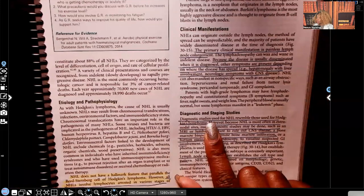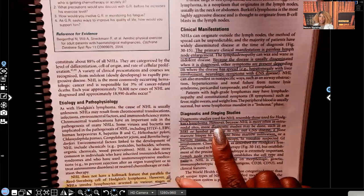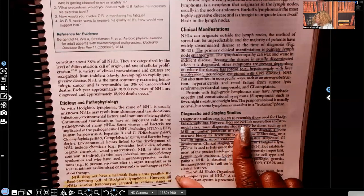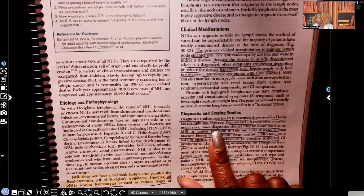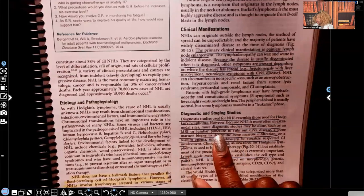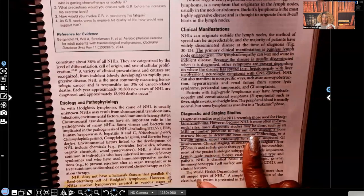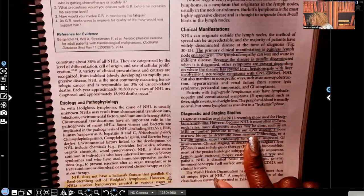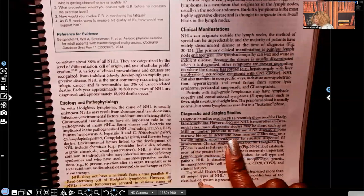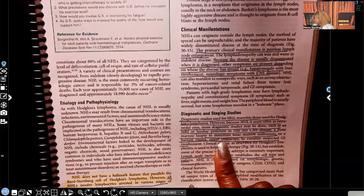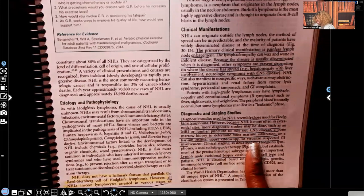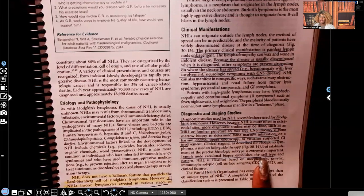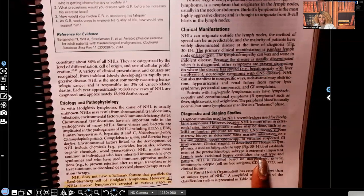Diagnostic studies used for non-Hodgkin's lymphoma resemble those used for Hodgkin's lymphoma. However, because non-Hodgkin's lymphoma is more often in the extranodal sites, more diagnostic studies may be done, such as MRI or lumbar puncture, to rule out CNS disease. Because remember, we just said that the patient may have these CNS manifestations. They can do a bone marrow biopsy to determine if the bone marrow has been infiltrated, a barium enema, upper endo to visualize suspected GI involvement. Lymph node excisional biopsy establishes the cell type and pattern. So when they cut out a part of that lymph node and they do a biopsy, that's where they could see what type of cells are involved in the actual pathology of this disease.